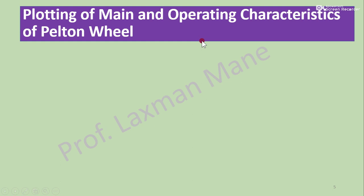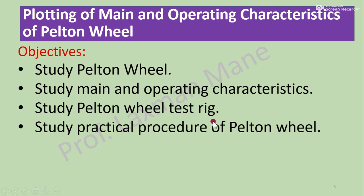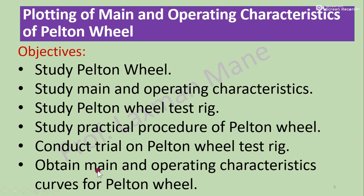The objectives for plotting main characteristics and operating characteristics of Pelton wheel are: to study Pelton wheel, study main and operating characteristics, study the Pelton wheel test rig, study practical procedure, conduct trial on the test rig, and obtain main and operating characteristic curves for Pelton wheel.